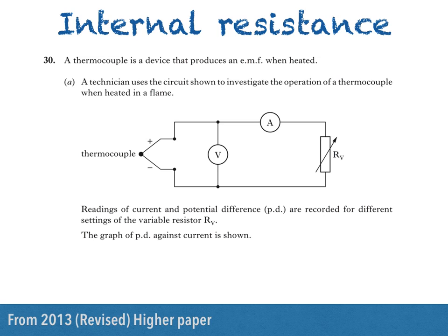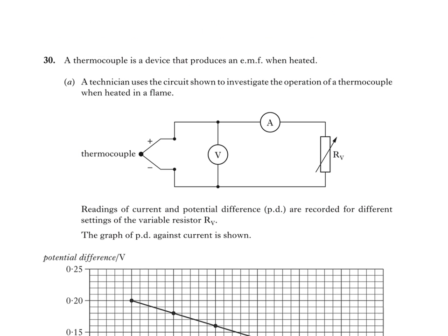Here's the first question from the 2013 revised Higher paper — I'll just be answering part A. A thermocouple is a device that produces an EMF when heated. A technician uses the circuit shown to investigate the operation of a thermocouple when heated in a flame. Readings of current and potential difference (PD) are recorded for different settings of the variable resistor RV. The graph of PD against current is shown.